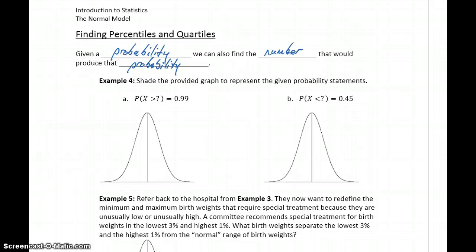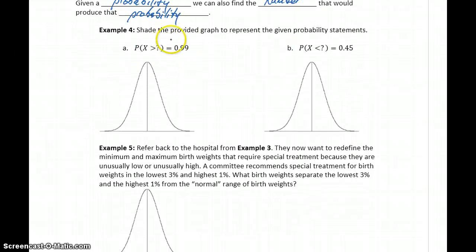For example, let's shade the graphs to match the given problems. So for instance, we want the probability that x is greater than something to be a probability of 99%. So there's some value that if we calculated the area under the curve greater than that value, that probability would be 99%, or 0.99.